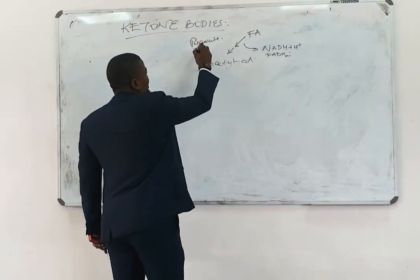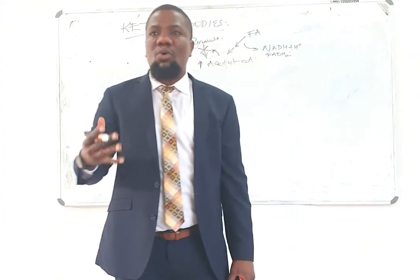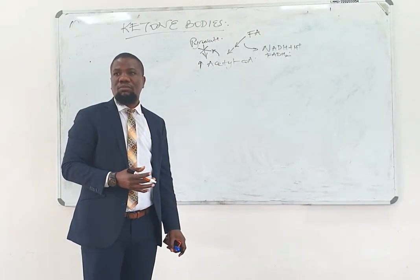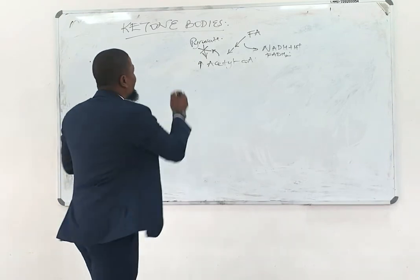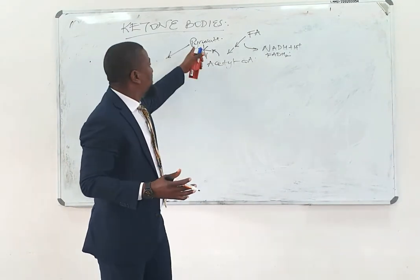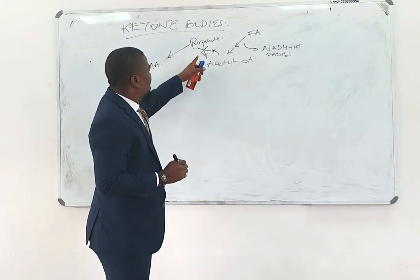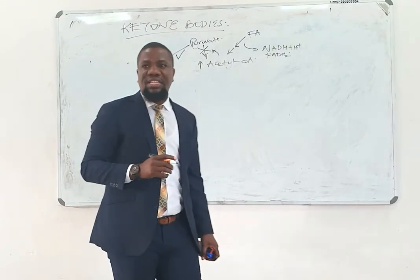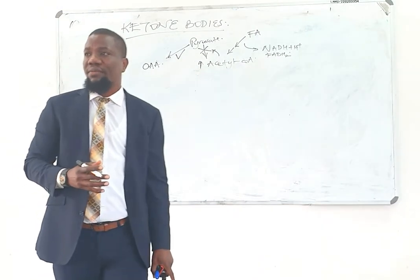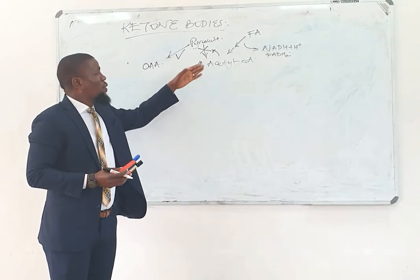This means the reaction converting pyruvate into acetyl-CoA would be allosterically inhibited by acetyl-CoA itself, so no acetyl-CoA will be produced from pyruvate. Additionally, acetyl-CoA is an allosteric activator of pyruvate carboxylase — the enzyme that adds CO2 to pyruvate to produce oxaloacetate — so this enzyme will be highly activated.